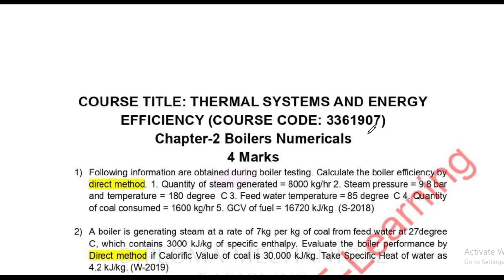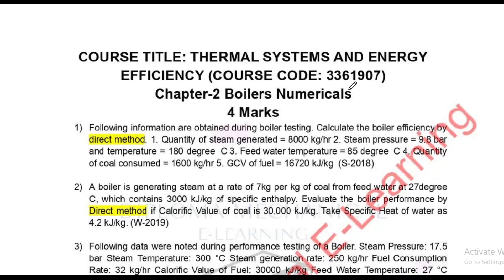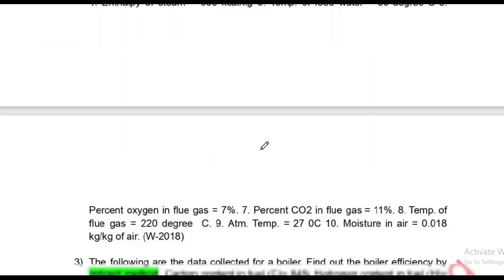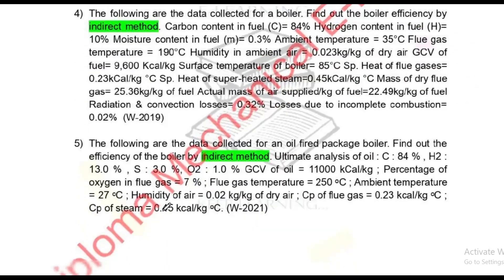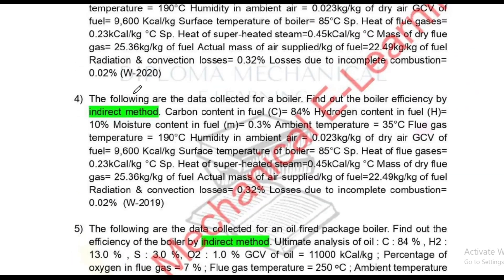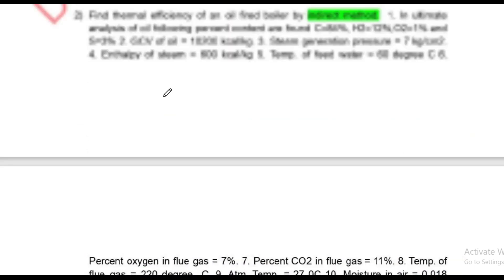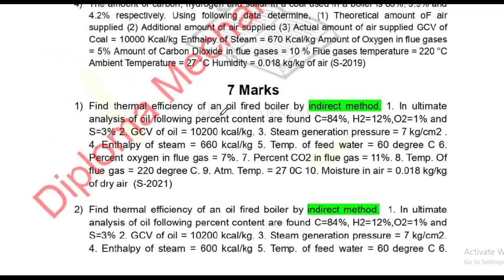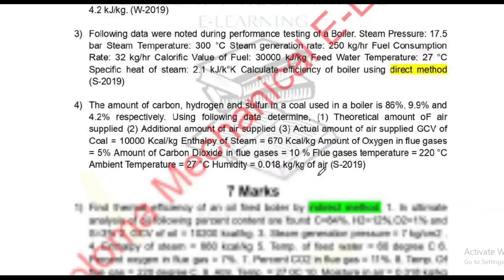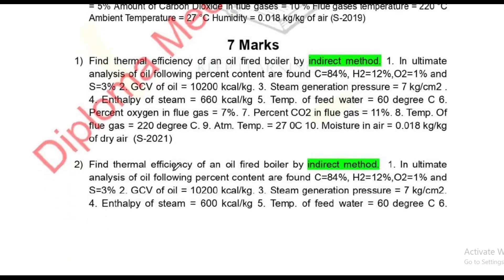In theory, we have already covered this. In our paper analysis, even 2-mark questions will be solved in English and Gujarati. The first chapter is Boiler — Chapter No. 2. Generally, questions are asked for 4 marks or 7 marks. We will look at the latest trend across papers: Winter 2021, Winter 2020, Winter 2018, and Summer 2021 — a total of around 7 papers analyzed.